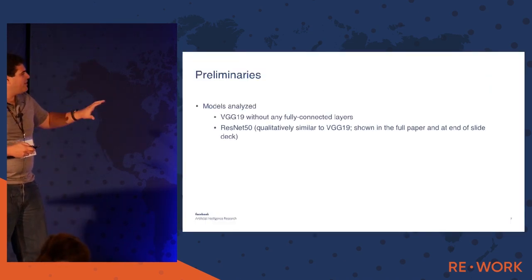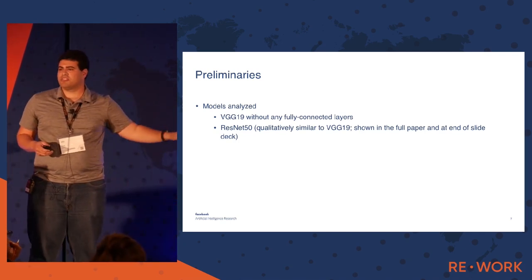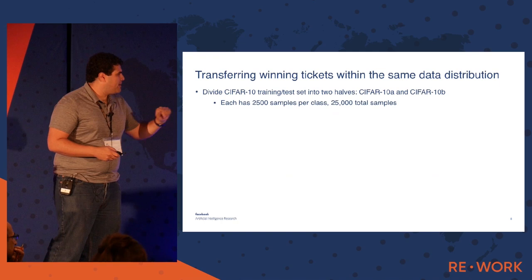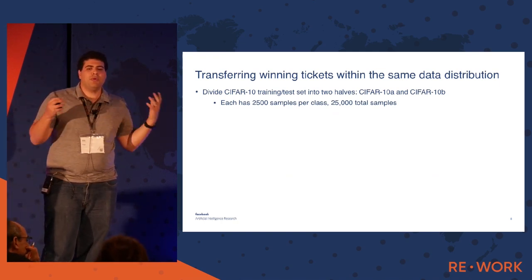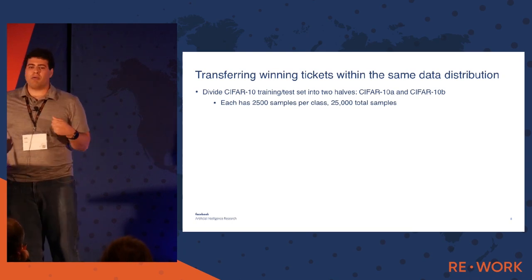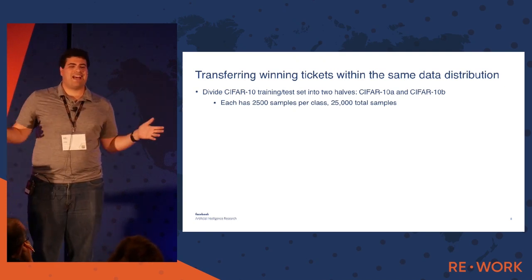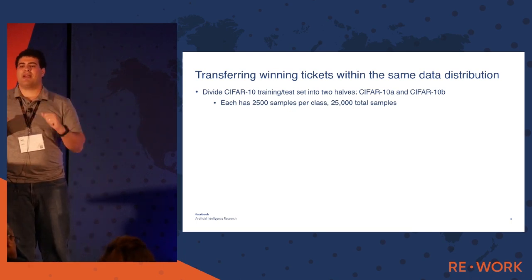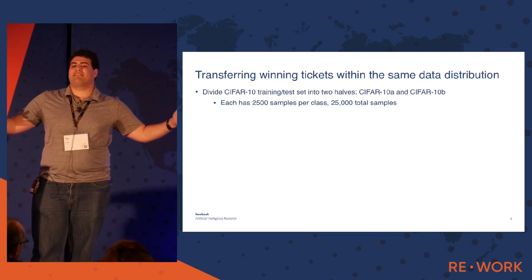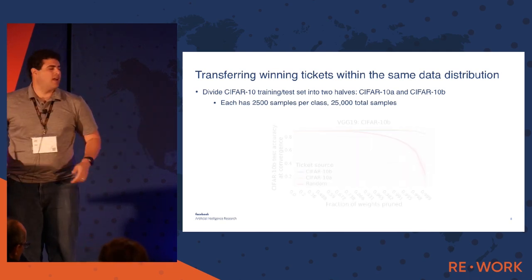We did this on several models. The main one I'll show today is VGG19, though we got qualitatively similar results with ResNet. We used CIFAR-10 throughout this study — a simple benchmark image classification dataset with 10 classes like dogs, cats, and planes, with 32x32 images. First, we divided the dataset in half, creating CIFAR-10A and CIFAR-10B, and asked: if we find a winning ticket on 10A, will it work on 10B?